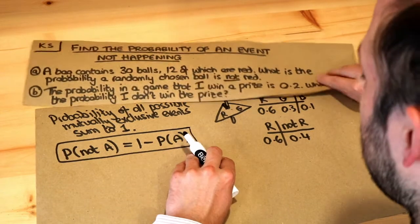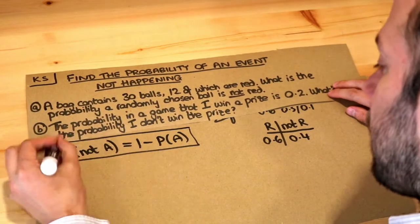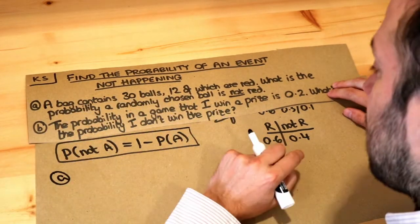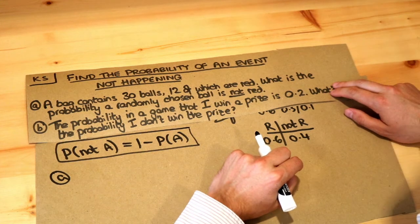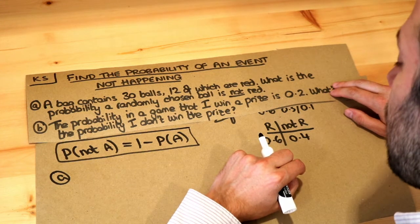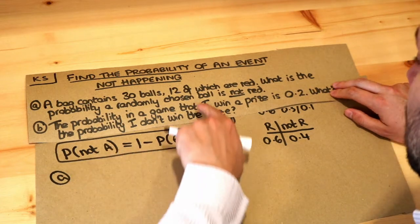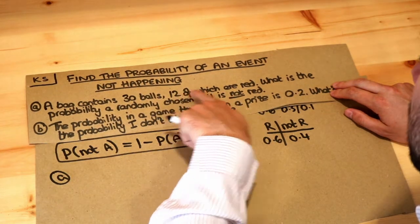So let's apply that to these particular questions here. A: A bag contains 30 balls, 12 of which are red. What's the probability a randomly chosen ball is not red? Well, to be honest, we could avoid using this because if you think about it, how many balls are not red?